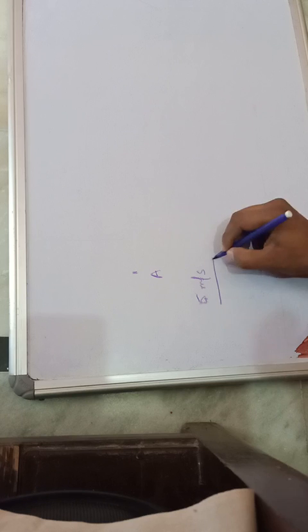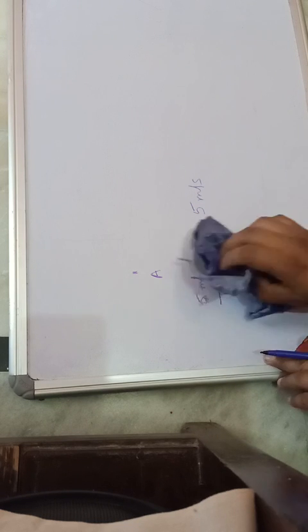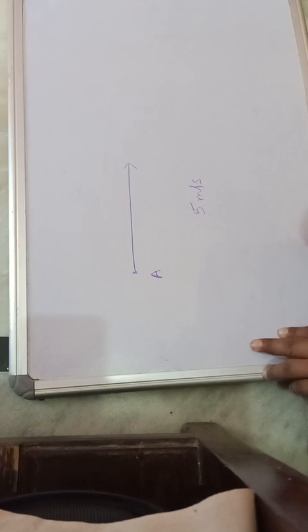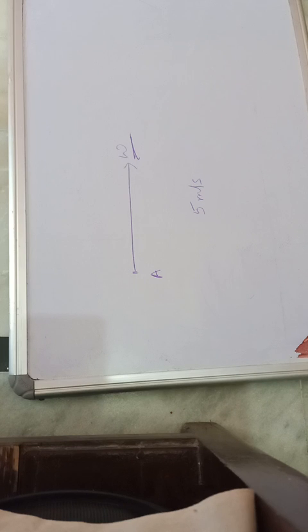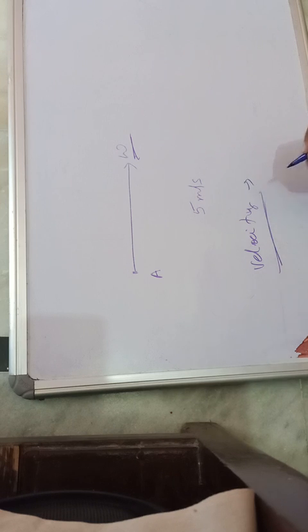Now, if boy A is moving with a speed of 5 meters per second in the direction towards west - speed is given and direction is also told. When both speed and direction are given, we call this velocity. Speed with direction is known as velocity.